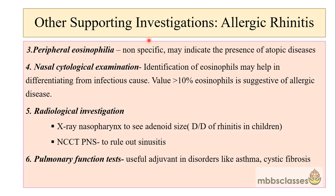Other supporting investigations for allergic rhinitis include peripheral eosinophilia, which is non-specific and just indicates the presence of atopic diseases. Cytological examination of the nasal mucosa swab with identification of eosinophils may help in differentiating from infectious causes. Radiology does not have much role in allergic rhinitis, but in children an X-ray nasopharynx can be done to see the adenoid size and CT scan can be advised to rule out sinusitis. Pulmonary function test is advised if the patient has associated diseases like asthma or suspected cystic fibrosis.